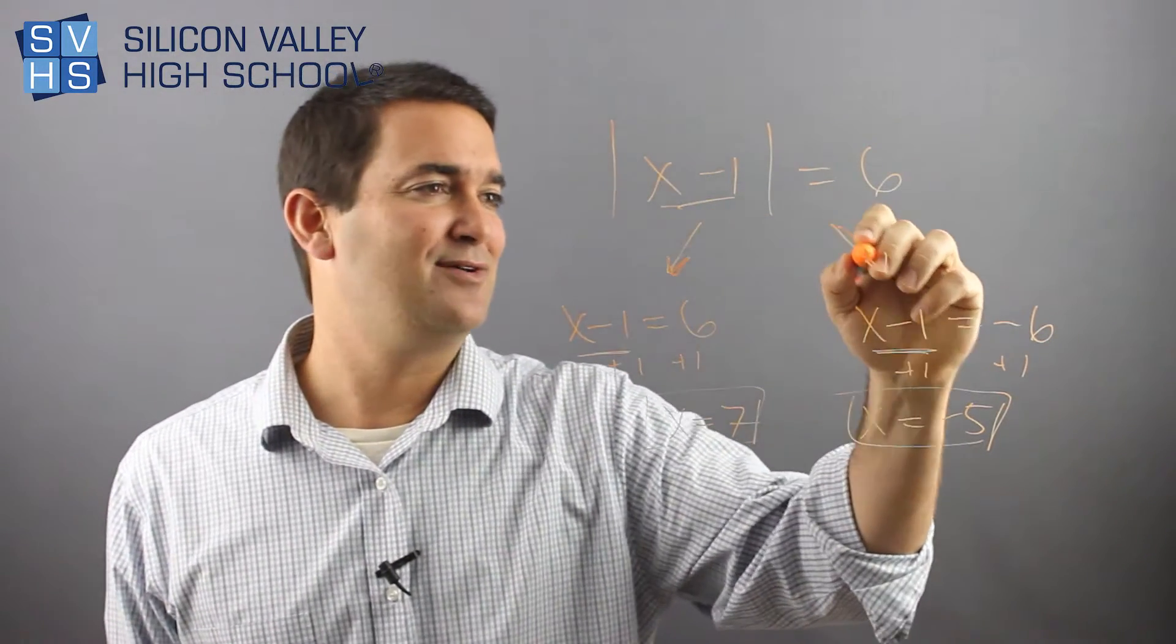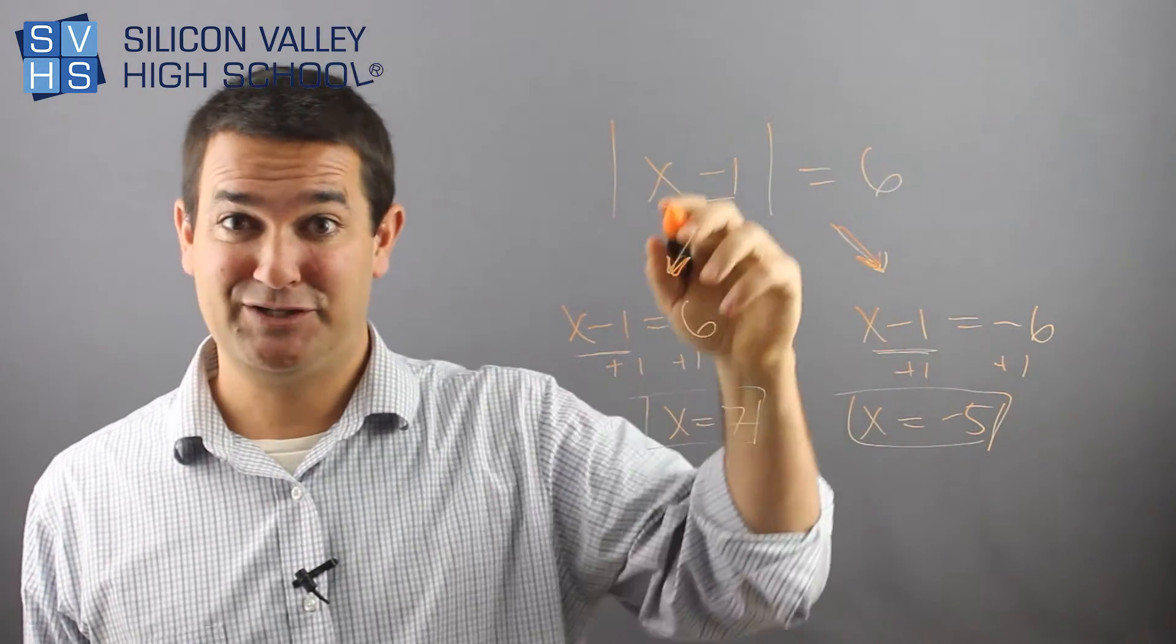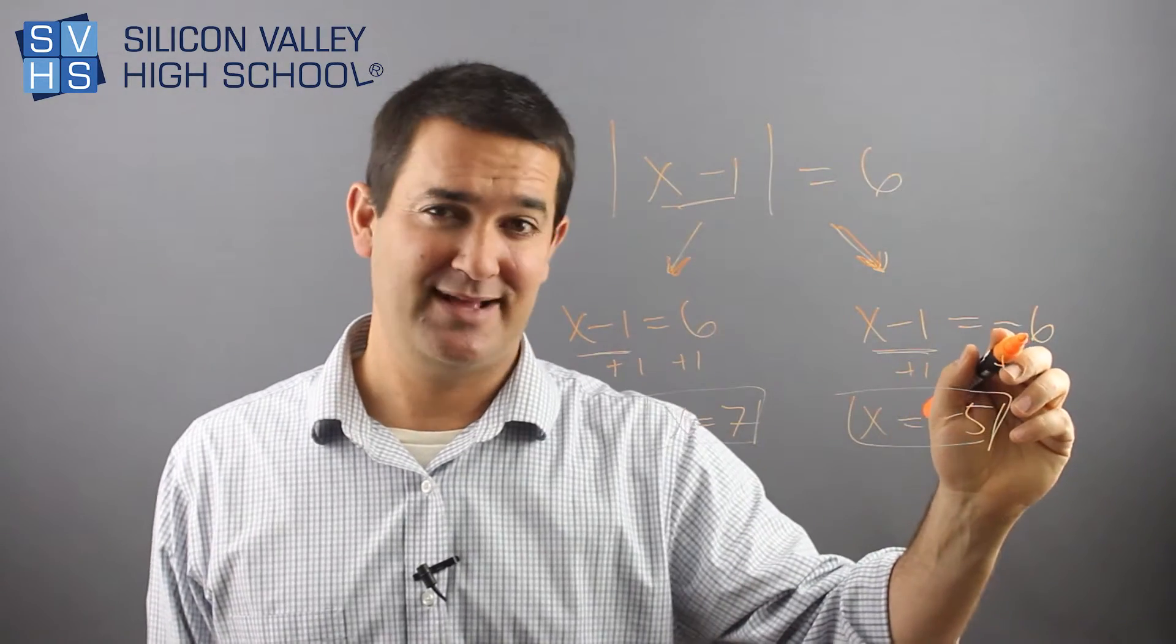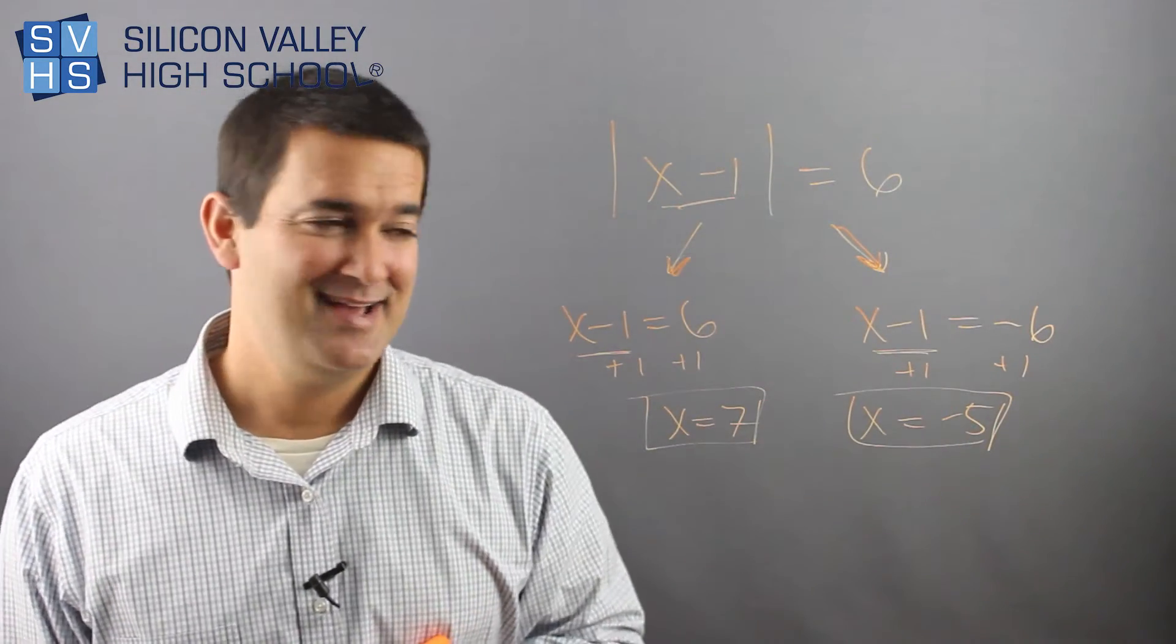If you do this without these arrows, you are messing up. Make sure you do two arrows. Left side the same, right side almost the same, except the solution and the answer is negative. And that's it. Pretty easy.